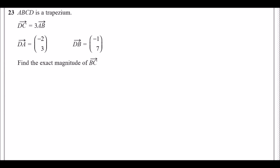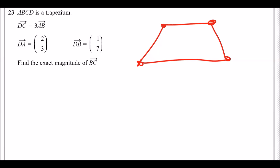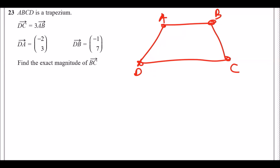Final question: ABCD is a trapezium. Drawing it out, DC is three times longer than AB, so DC is the longer parallel side. Vector DA equals (minus 2, 3) and vector DB equals (minus 1, 7). We need to find the exact magnitude of vector BC.